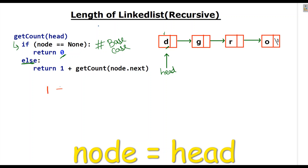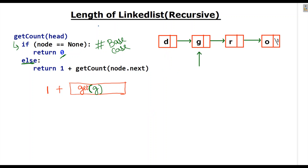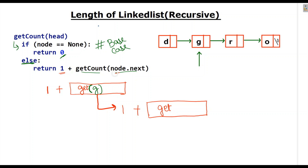It will return 1 plus get_count(node dot next). D dot next is G, so it will call get_count with G. Then it will check the base case — is node equal to None? No, so for node dot next it will again return 1 plus get_count(node dot next). That means G dot next, and G dot next is R.